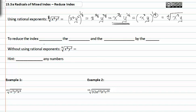Once we've seen how to do one, to reduce the index, divide the index and the exponents by the greatest common factor.